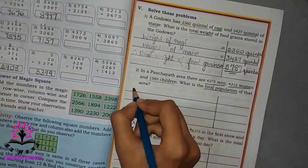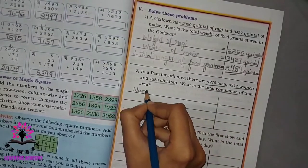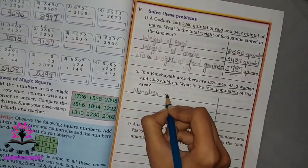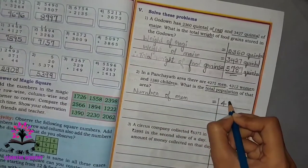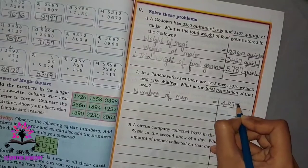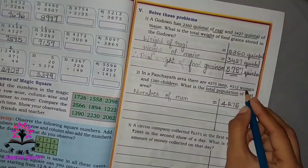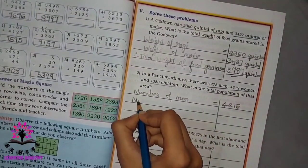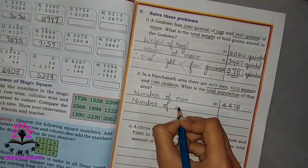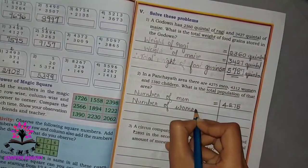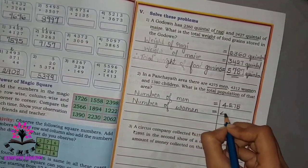So first write number of men. Number of men is equal to 4275. Number of women: 4,312.